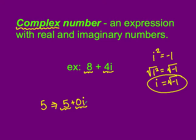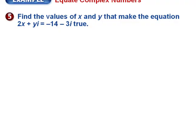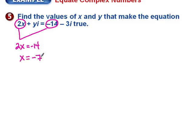We did a lot of problems yesterday simplifying imaginary numbers and radicals. Now we're going to learn how to do some operations with them. Our first example is to find the values of x and y that make the equation true. Complex numbers have a real part and an imaginary part, so I'm going to match the real part of the left side to the real part on the right side. That gives me 2x equal to negative 14, so x equals negative 7.